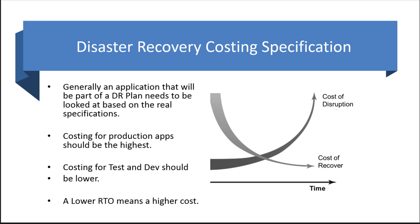In many cases, they might have a different level of costing or budgets as well, so we may not be able to replicate everything. We need to identify what the proper RTO and RPO are — trying to understand, if we have a disruption, how long we could actually last without substantial costs to recover and costs to the business. Downtime in a lot of industries could cost millions of dollars per hour, and these are things we need to really identify.